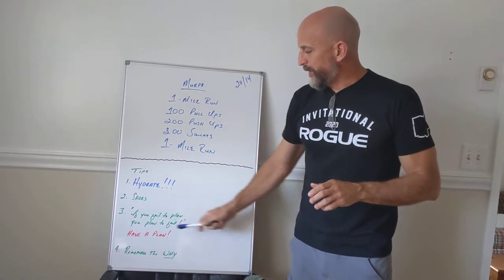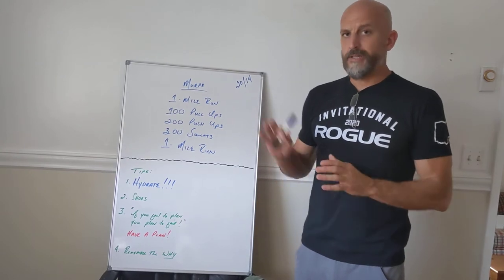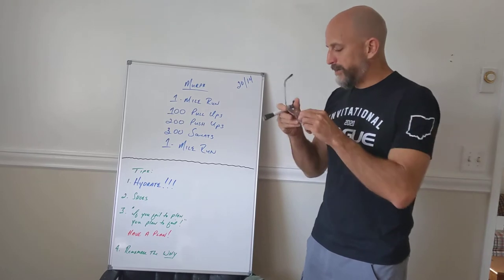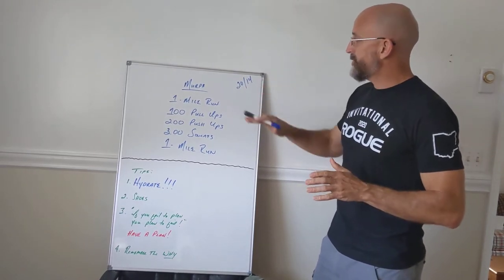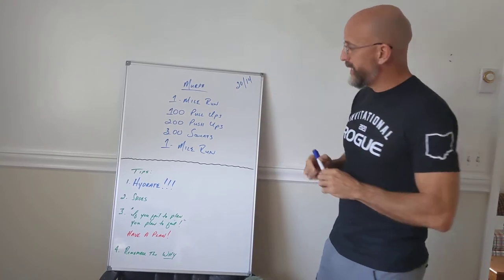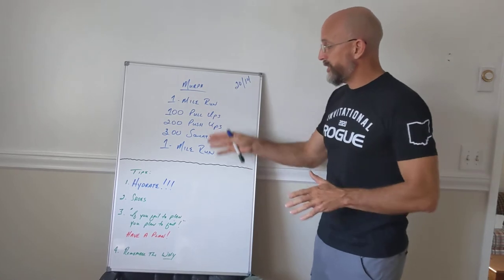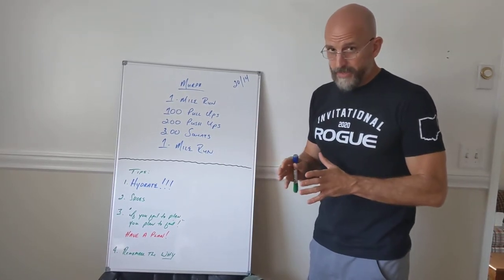Third, if you fail to plan, you plan to fail. Plain and simple. Have a plan. Let's talk about that rep scheme just a little bit. When you do Murph, RX version, says do your one mile run, then you do 100 pull-ups, then you do 200 push-ups, then 300 squats, then a one mile run. You don't have to do it that way.